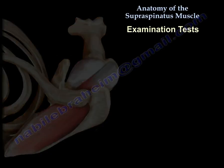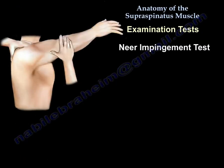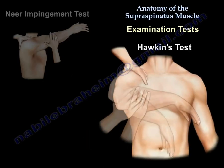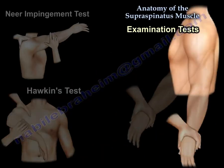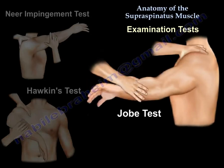Several tests can assess the supraspinatus, such as the Neer impingement test. The muscle is tested with the shoulder abducted to 90 degrees, flexed to 30 degrees, and maximally internally rotated. Downward pressure is resisted primarily by the supraspinatus. This is probably the best test for this muscle's function.